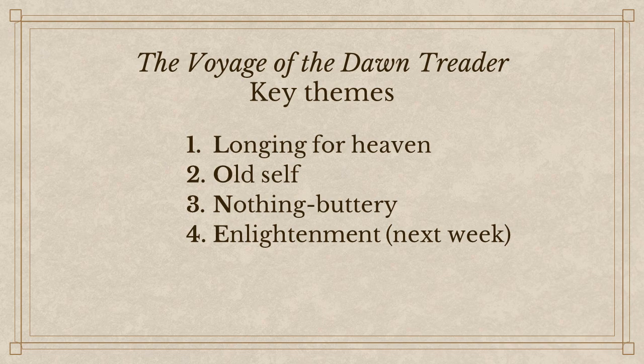What I want to do is highlight four key themes from The Voyage of the Dawn Treader today. Number one: longing for heaven. Number two: old self. Number three: nothing buttery. And number four: enlightenment. If it helps you remember that, the acronym is LONE — because their first destination is the Lone Islands. That was just a coincidence that it worked out that way. Hopefully that helps you remember our key themes for today.